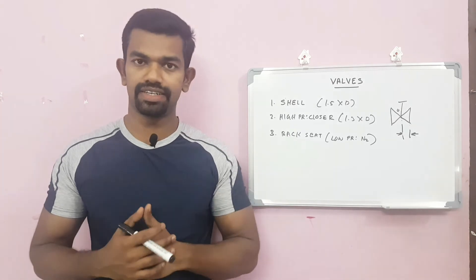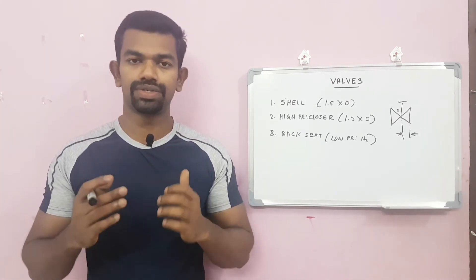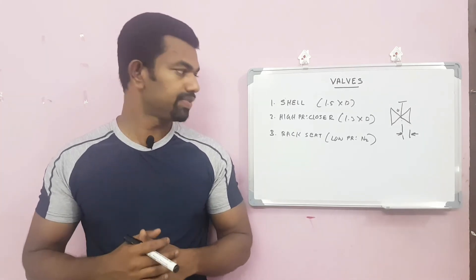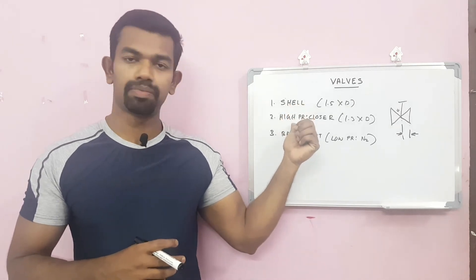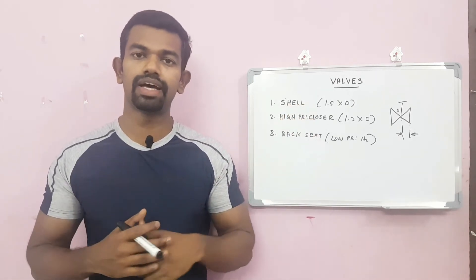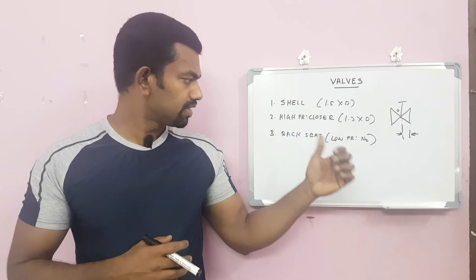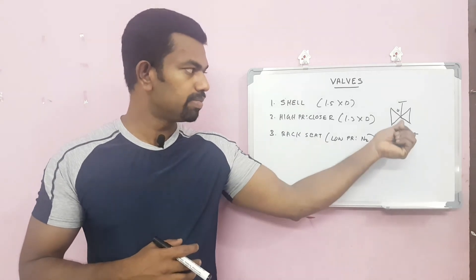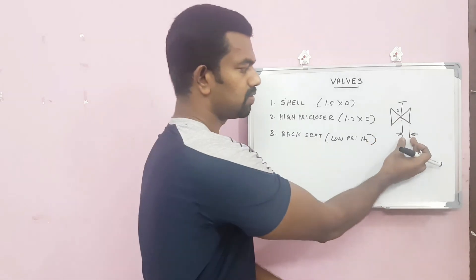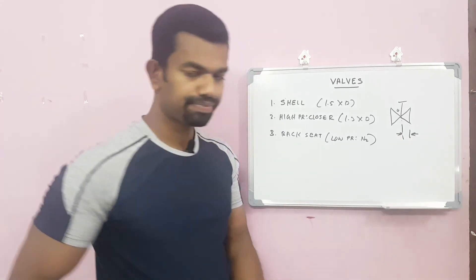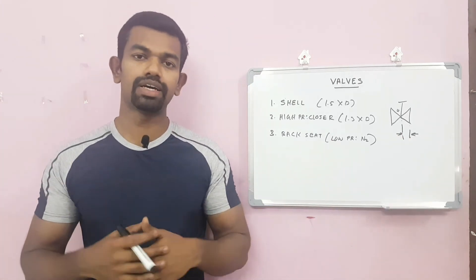It is the backseat test. For the backseat test, usually we are doing by nitrogen. But in the case of shell and high pressure closure test, we will do by hydrostatic test. In the case of backseat test, the valve will be closed and we will test the opposite side of the valve and verify the air bubbles quantity.